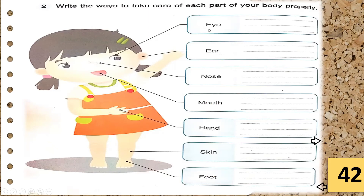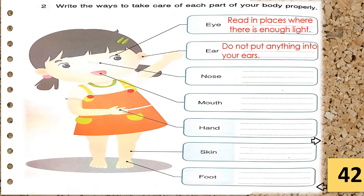Let's do this together. For the eye: read in places where there is enough light, and do not read in dim places. For the ear: do not put anything in your ears. For the nose: do not put anything in your nose.